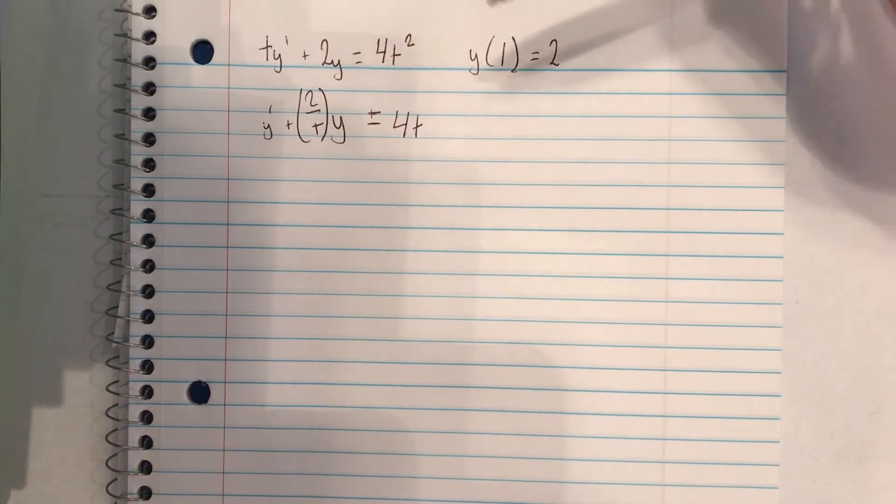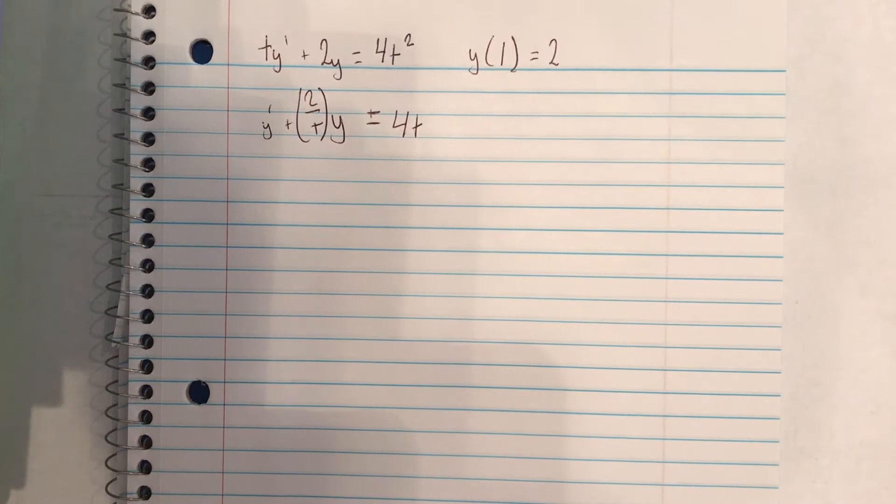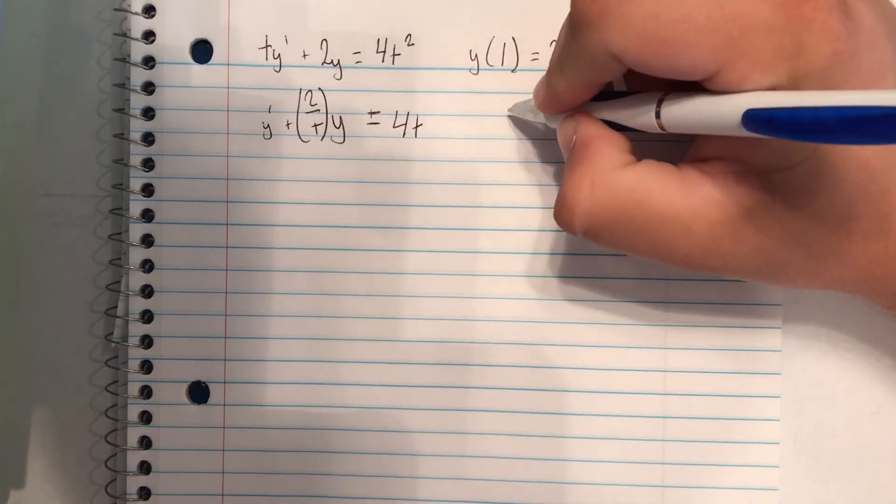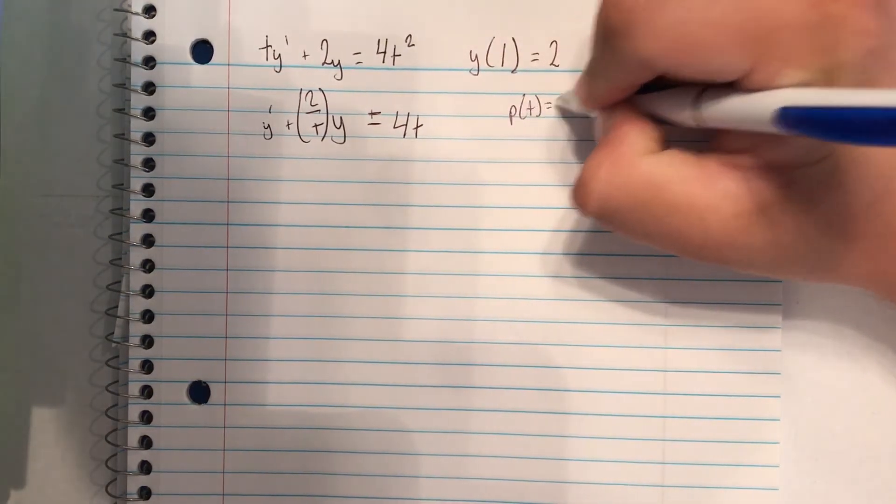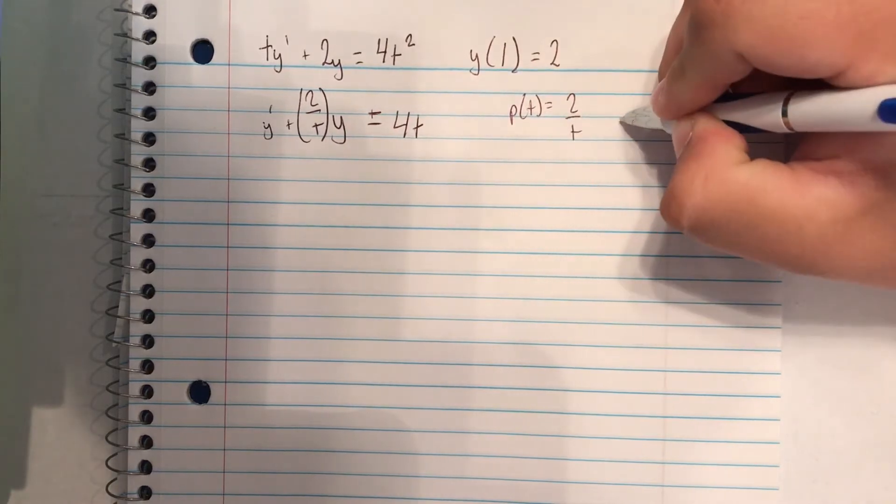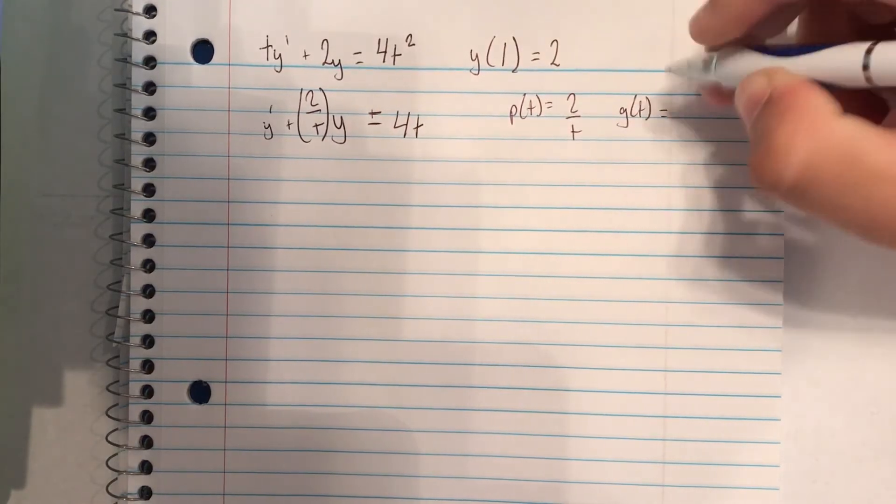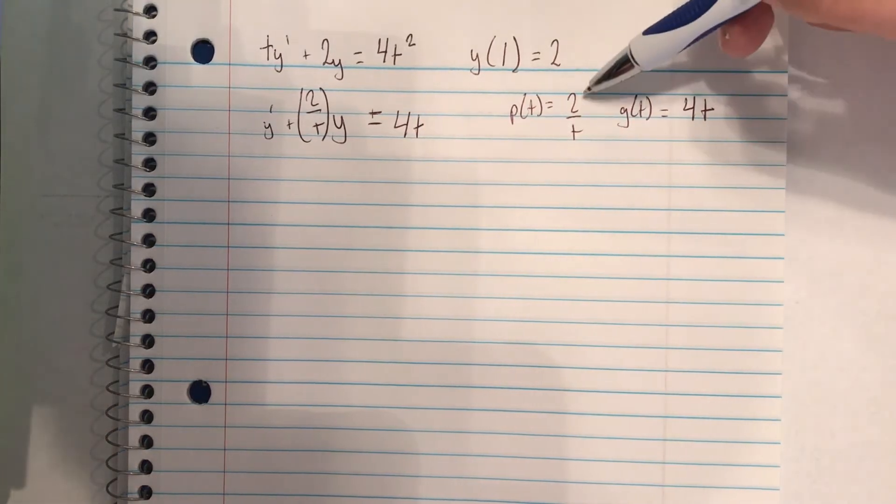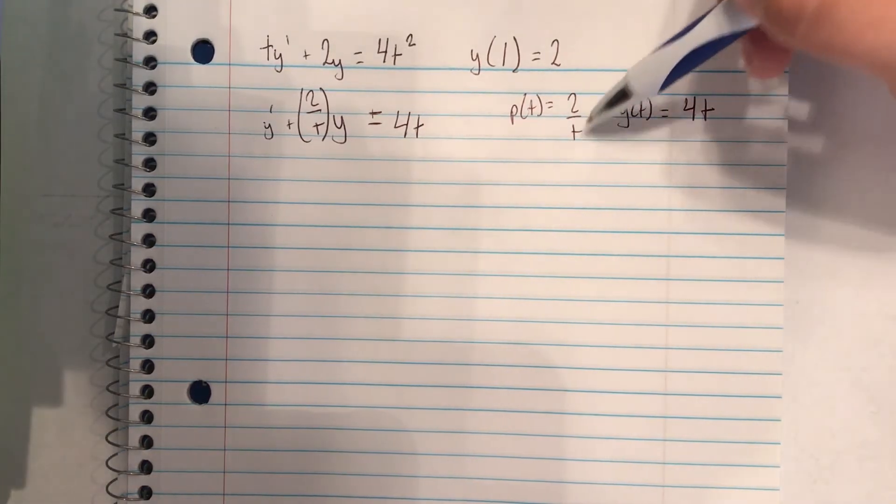So now we have some linear equation and we need to find p(t) and we need to find g(t)'s interval. So p(t) is going to be equal to 2/t and g(t) is equal to 4t. We know that p(t) cannot equal 0.